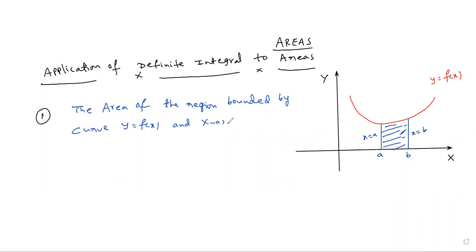And X axis, X axis and the coordinates, the particular diagram, X is equal to A and X is equal to B.